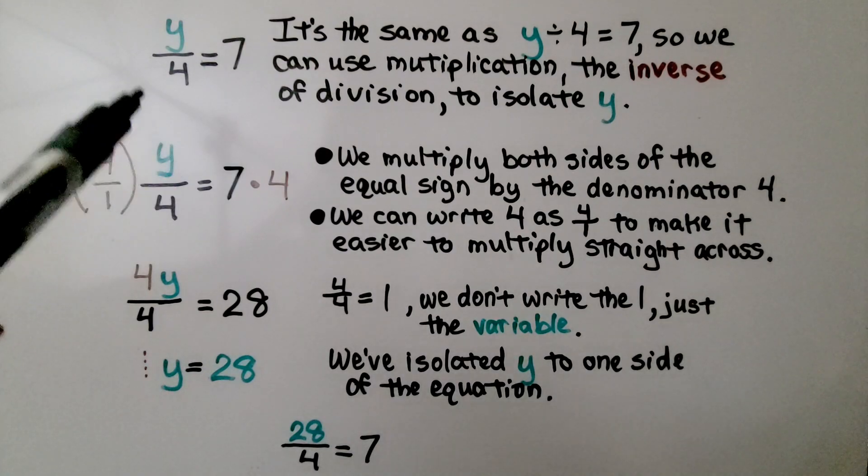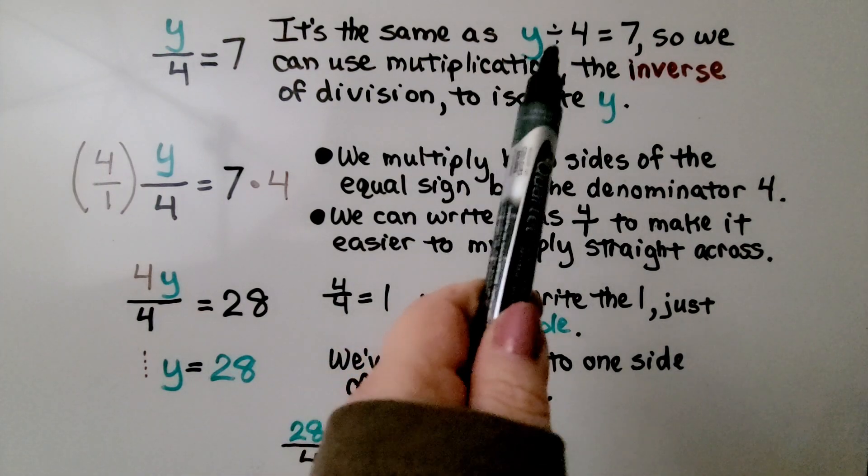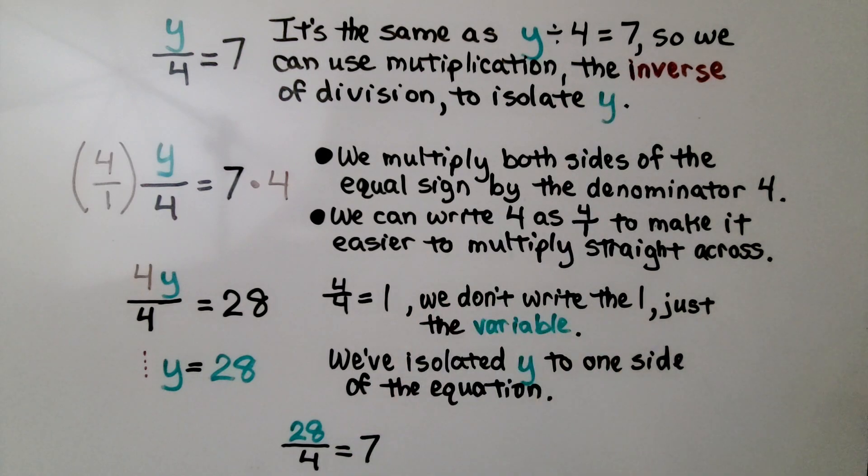In this equation, we have y as a numerator, 4 as the denominator. We have y divided by 4 is equal to 7. It's the same as y divided by 4 is equal to 7. We have division, so we can use multiplication, the inverse of division, to isolate y.